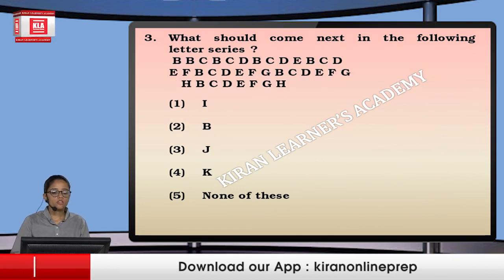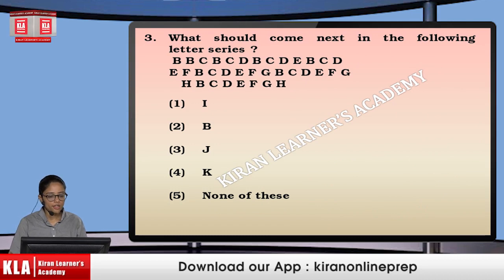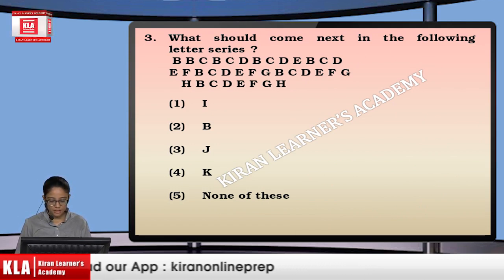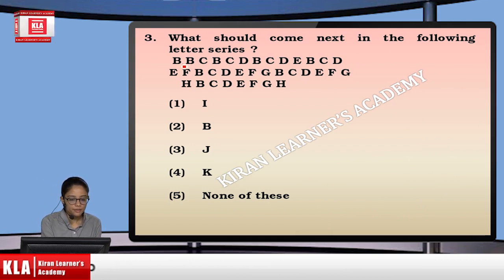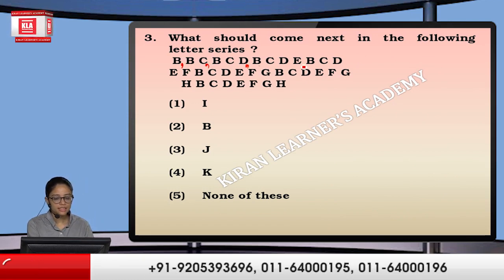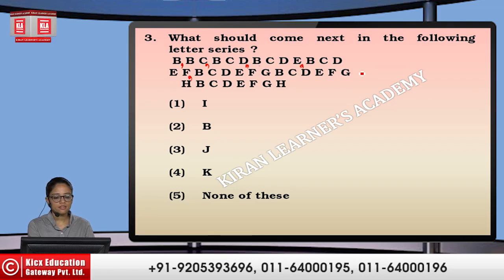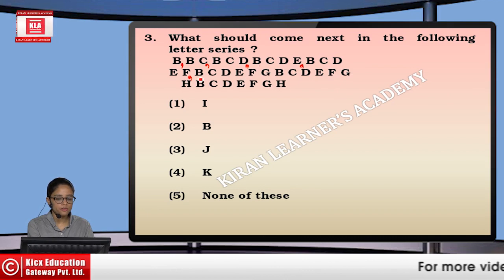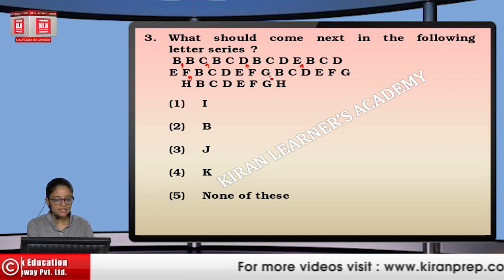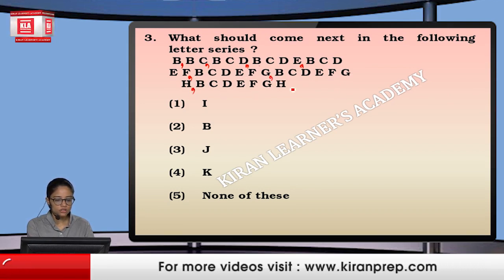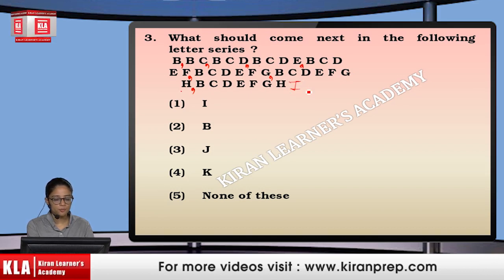Next question: what will come next in the following letter series? The series goes B, BC, BCD, BCDE, BCDEF — every successive term has one extra letter compared to the previous one. So we continue with BCDEFG, BCDEFGH, and then BCDEFGHI, ending with I. The answer is option 1.